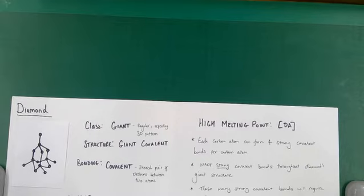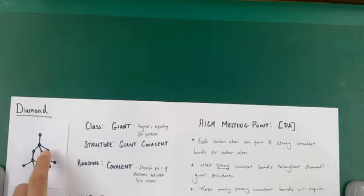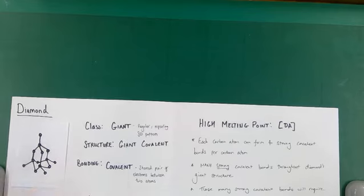Its actual structure is giant covalent, therefore that gives us a hint at the type of bonding going on inside the structure. The bonding inside diamond structure is covalent, that means there are shared pairs of electrons between the carbon atoms. And as you can see from the picture, the diagram, each carbon atom can form up to four strong covalent bonds. It does form four strong covalent bonds per carbon atom.